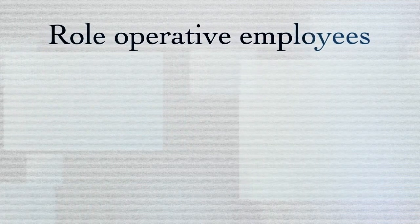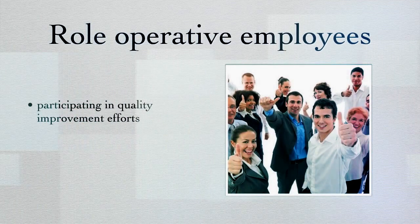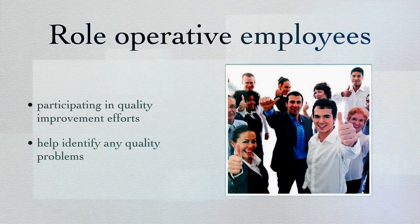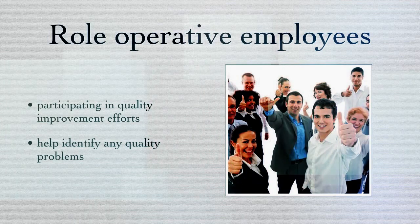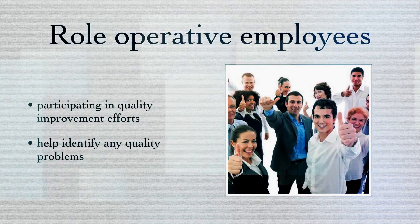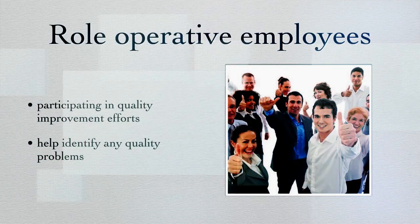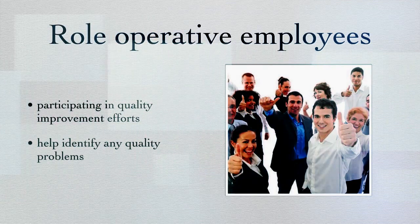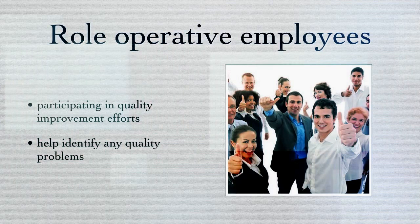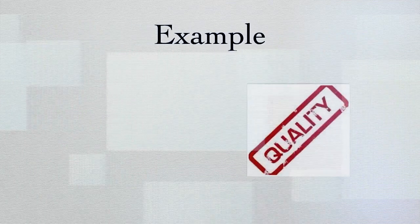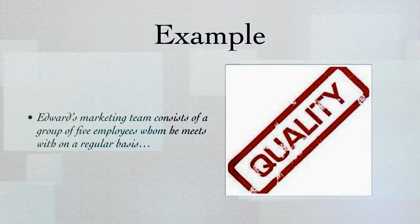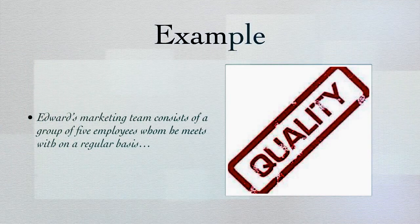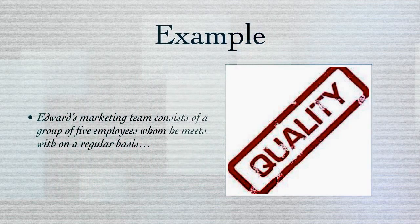The role of operative employees is that they participate in quality improvement efforts and help identify any quality problems. Operative employees are the workers who make up an organization's labor force and who don't belong to any level of management. They are responsible for participating in quality improvement efforts, providing leadership in those efforts when required, and helping identify any quality problems that need to be addressed. For example, Edward's marketing team consists of five employees. During their last meeting, Chris, an employee, pointed out that a recent marketing campaign didn't have the desired impact, and the team was able to implement changes to improve the quality of the next campaign.